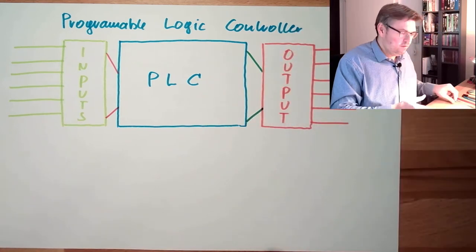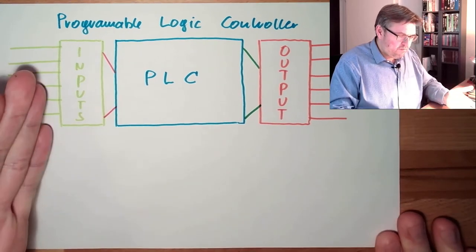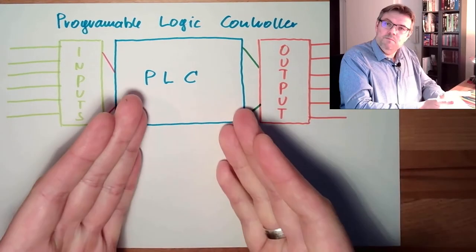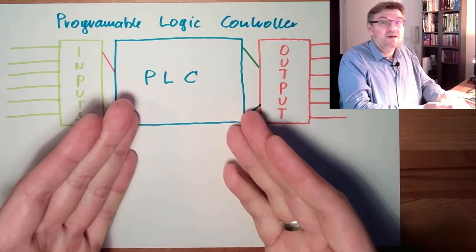That's the standard behavior of a control, right? Have inputs, have outputs, and in between there is some logic. Should not be new.